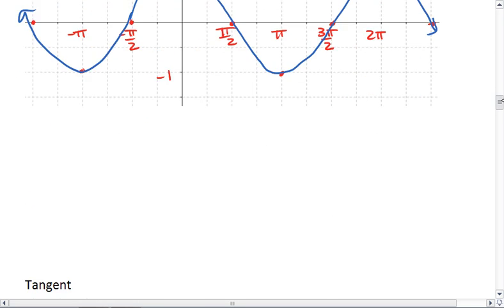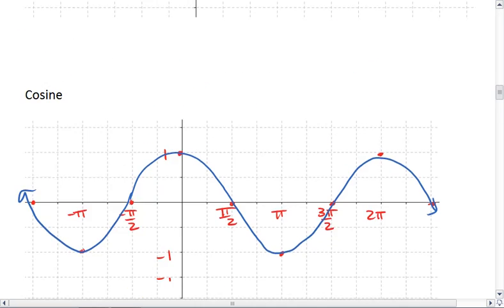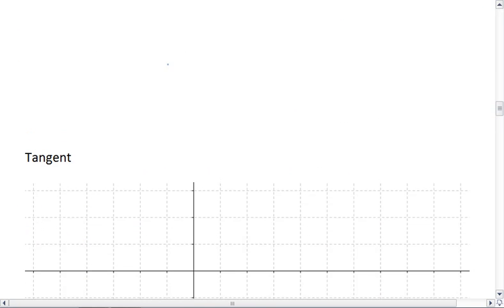Now let's look at tangent. Tangent is a relationship of sine over cosine, meaning it wants to know the relationship of this vertical height over the horizontal.